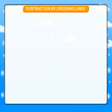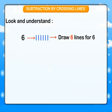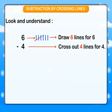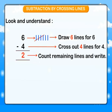Subtraction by crossing lines. Look and understand. 6: draw 6 lines for 6. Minus 4: cross out 4 lines for 4. Is equal to 2: count the remaining lines and write.